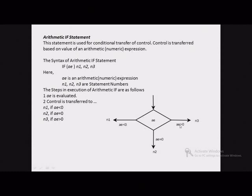The diagram here shows how this statement works. This is the inlet. We have shown some arithmetic expression AE. If value of this expression is less than 0, then this path is followed. If AE is equal to 0, this path will be followed. And if AE is greater than 0, this path will be followed. So there are three possible outlets and one inlet.